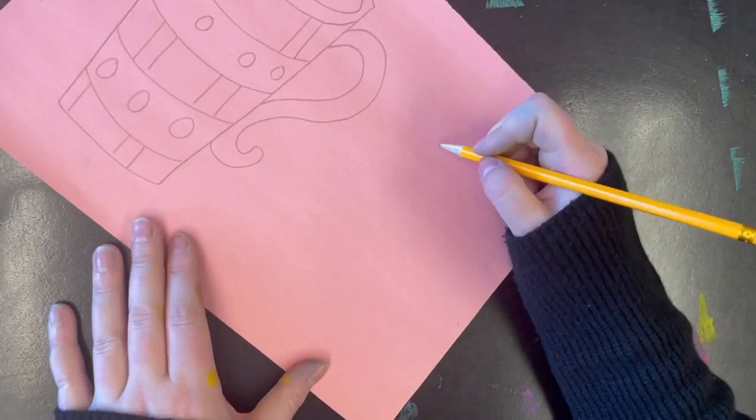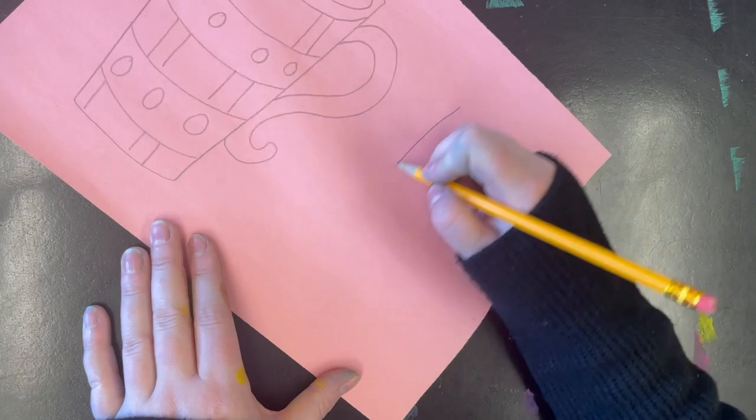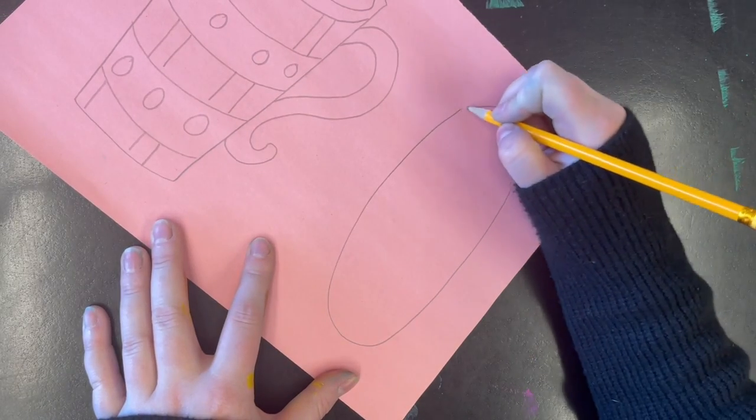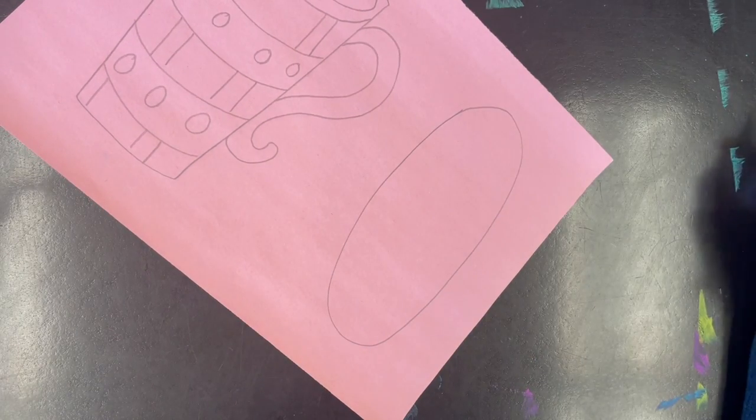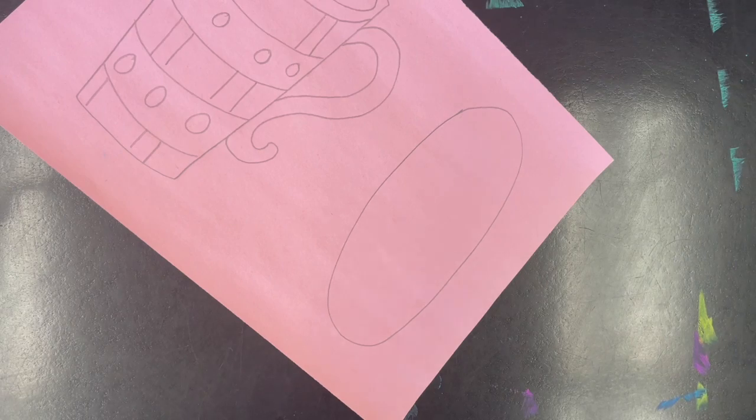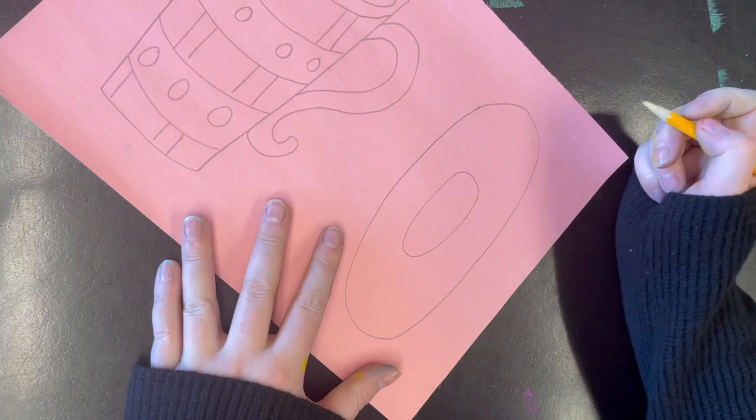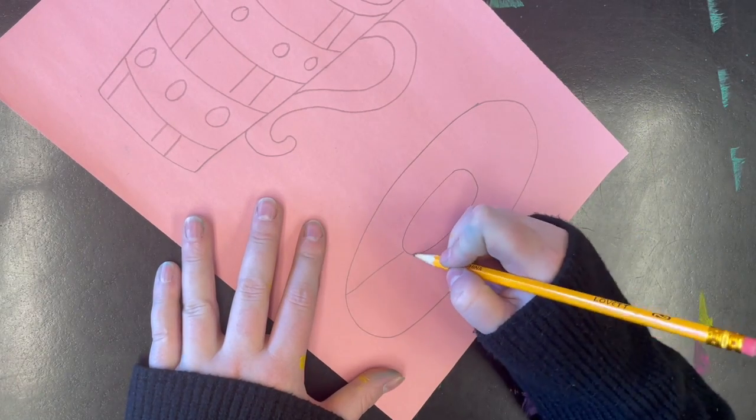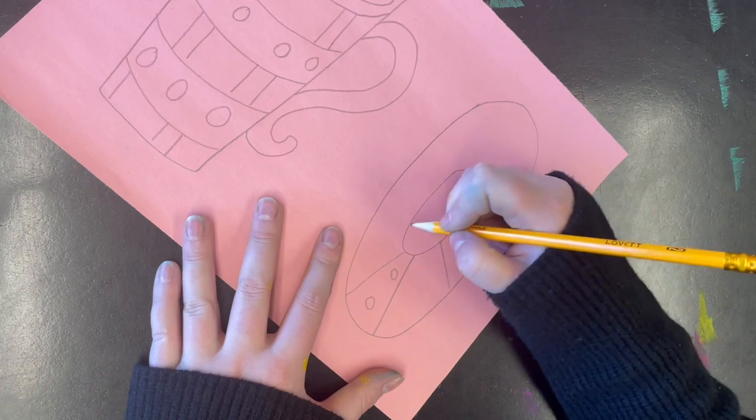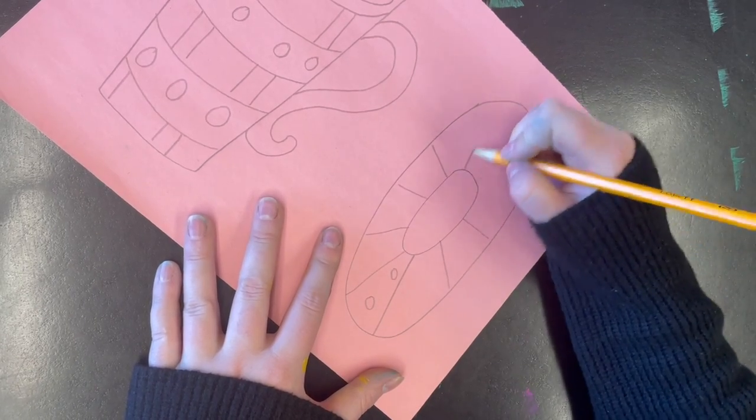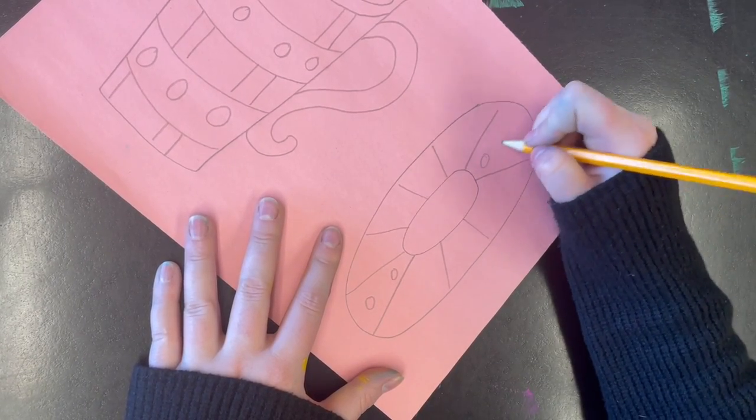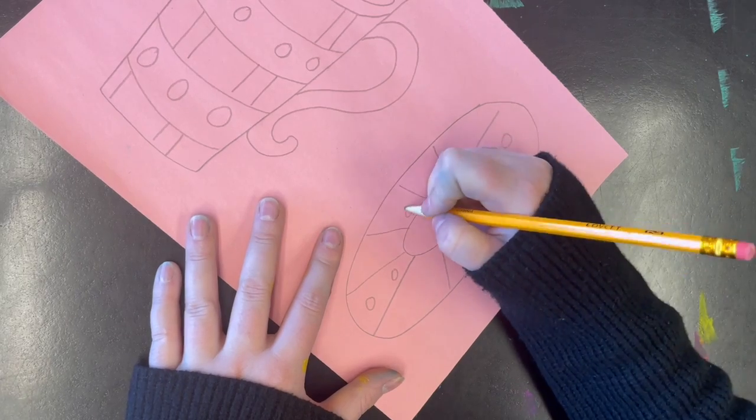You also need a saucer. A saucer is just like a plate that can hold any cookies or spills, and that should just be like an oval. Again I'm going to add a little circle in the middle where the cup goes, and then I'm going to add a pattern. I think I'm going to make mine match the cup.